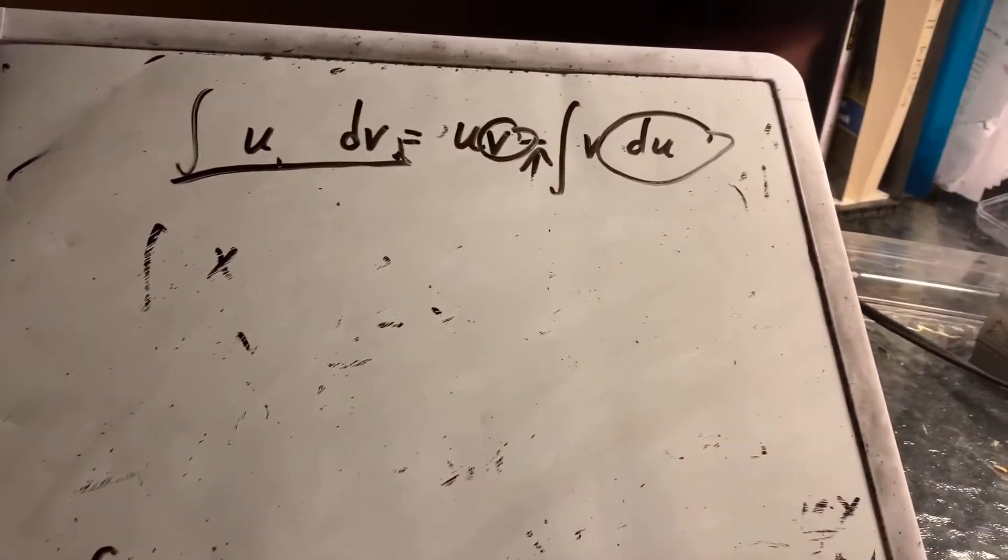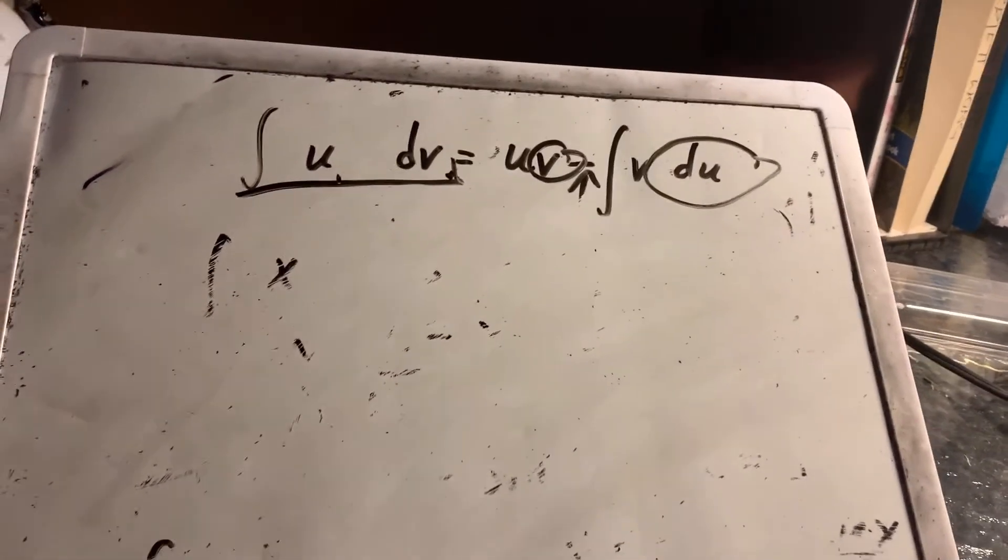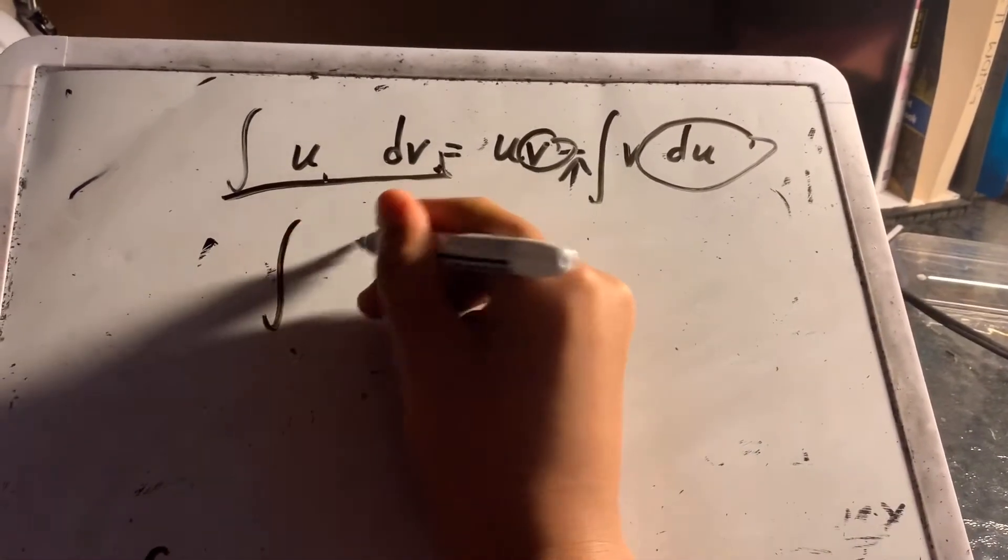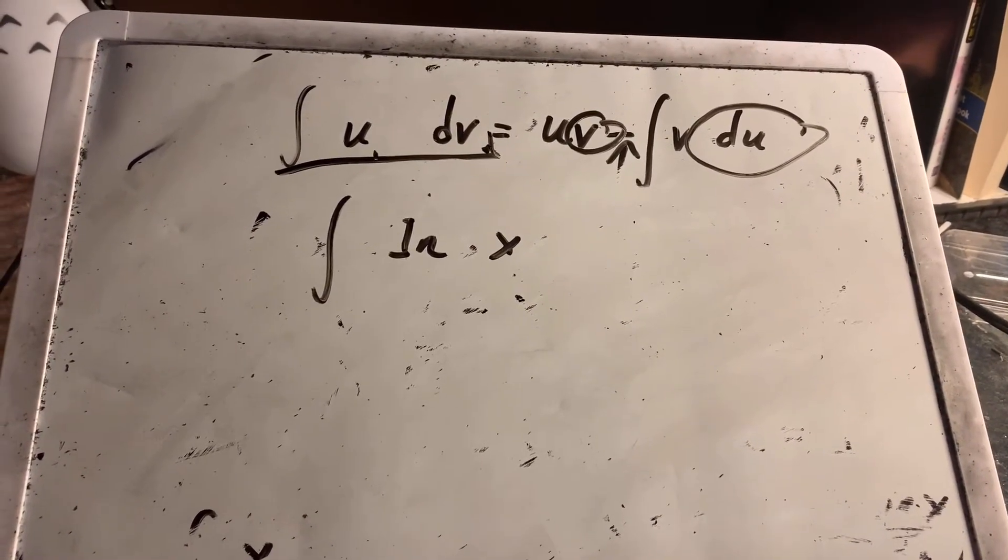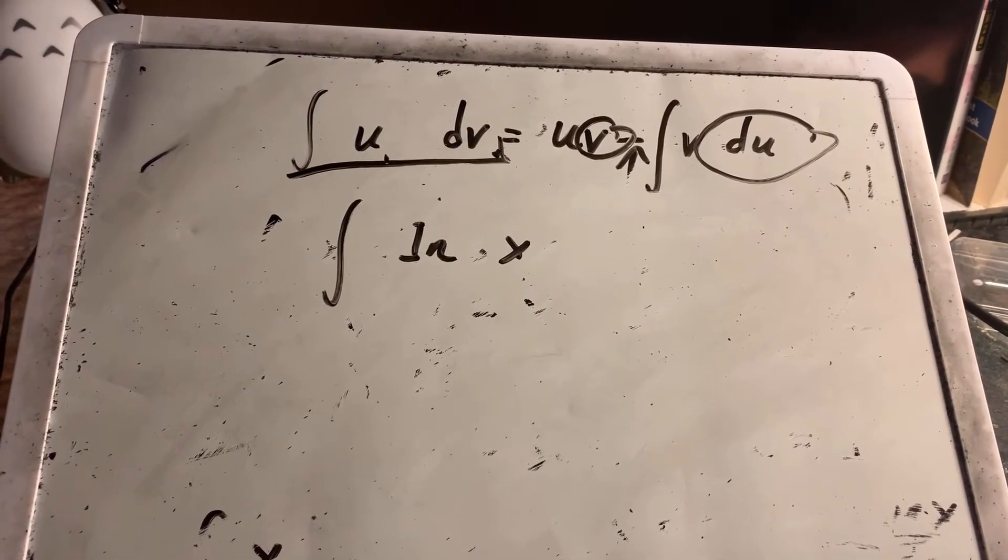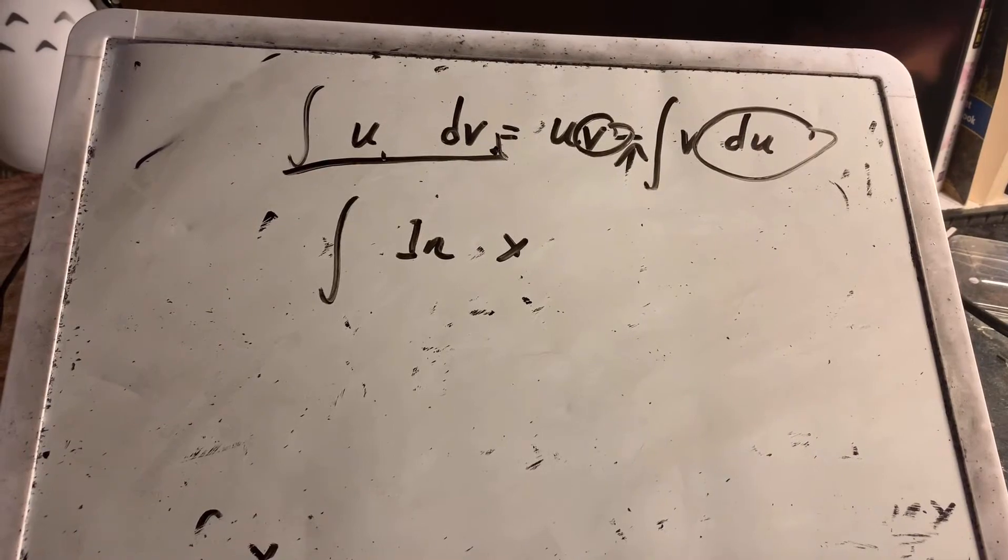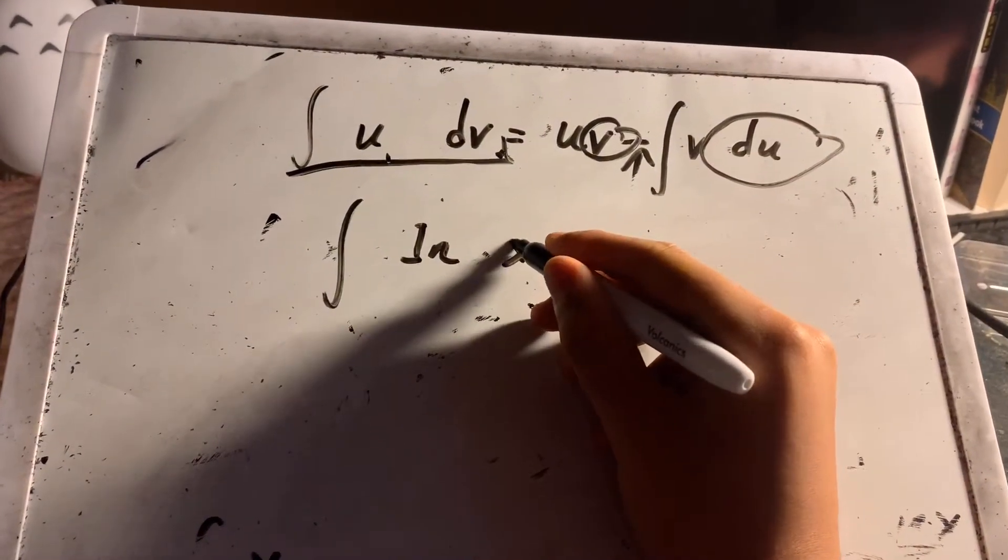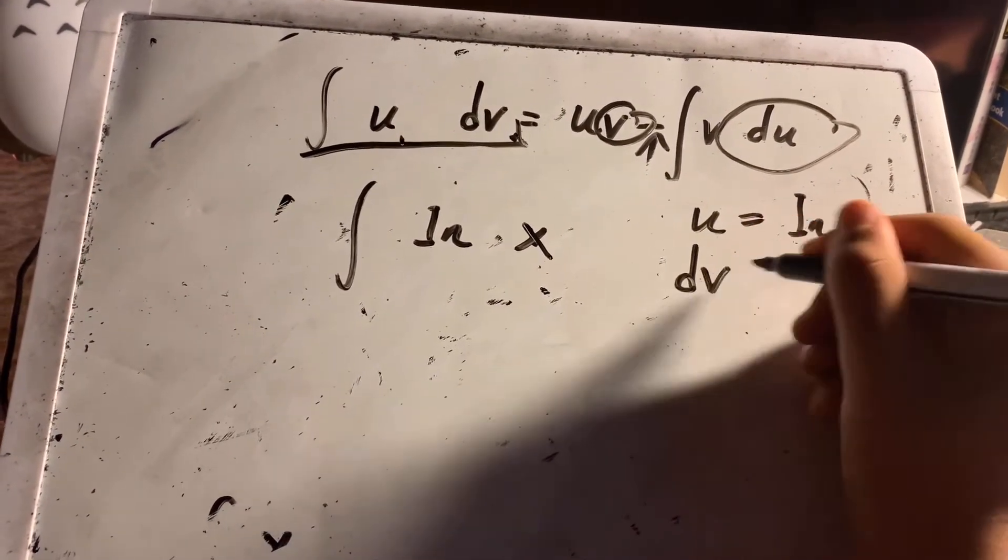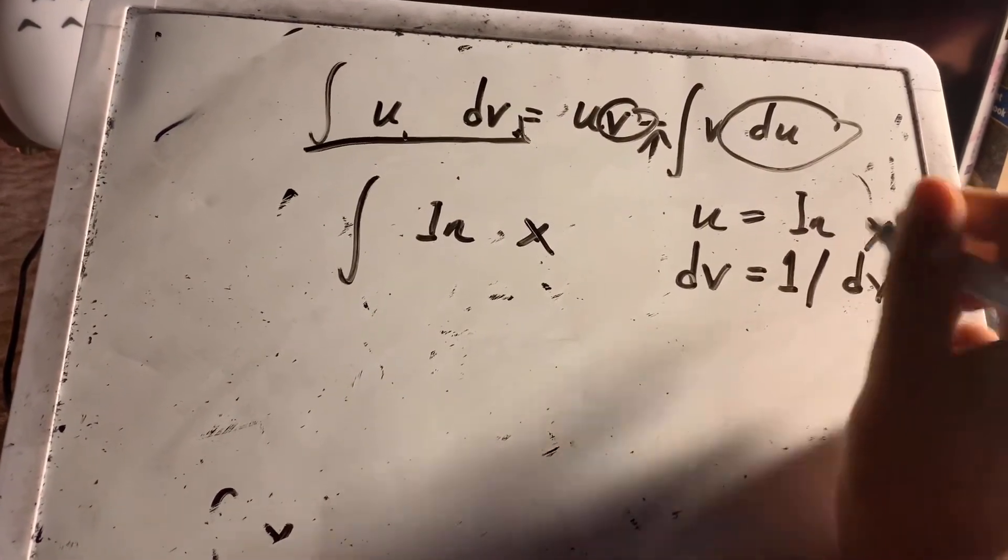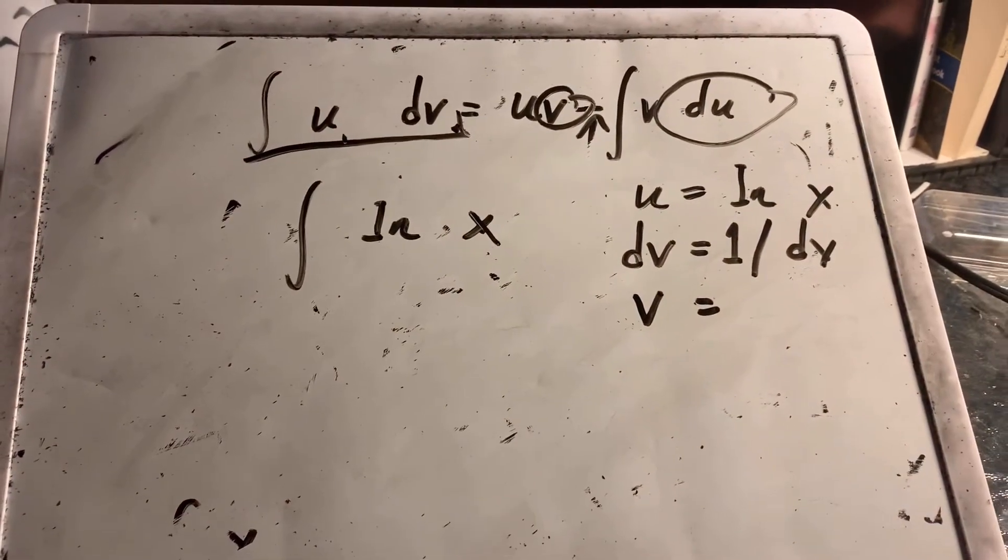Let's give one more example to make this more clear. In this case, u can only be ln x, because it is impossible to be anything else. dv is equal to 1 or dx. So we have listed this out and we just calculate v easily.